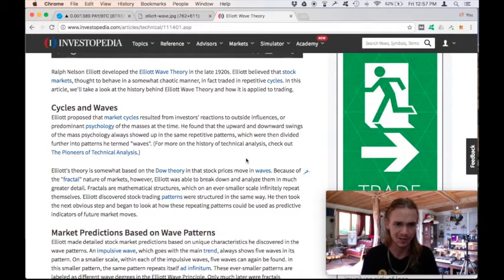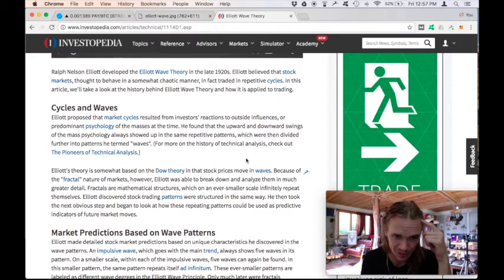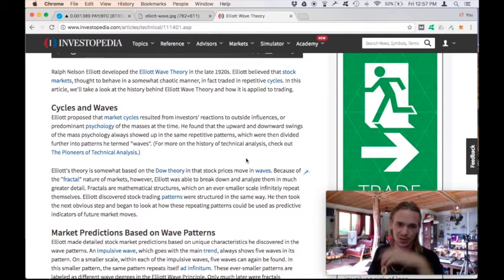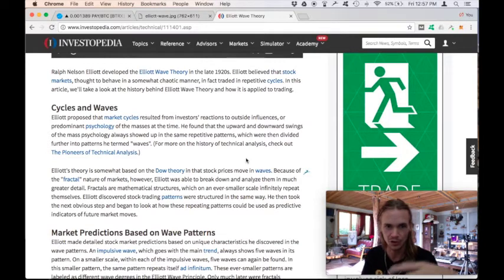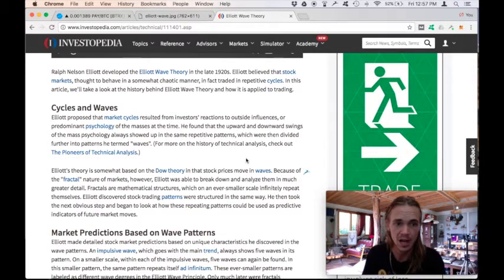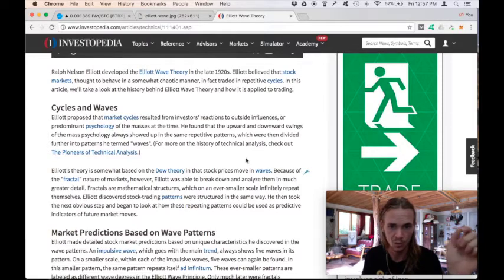Elliott proposed that the market cycles resulted from investors' reactions to outside influences, predominantly psychology of the masses at the time. So this profound thought that the upward and downward swings of the mass psychology showed up in the same repetitious patterns, which then divided into smaller patterns, which he termed waves.